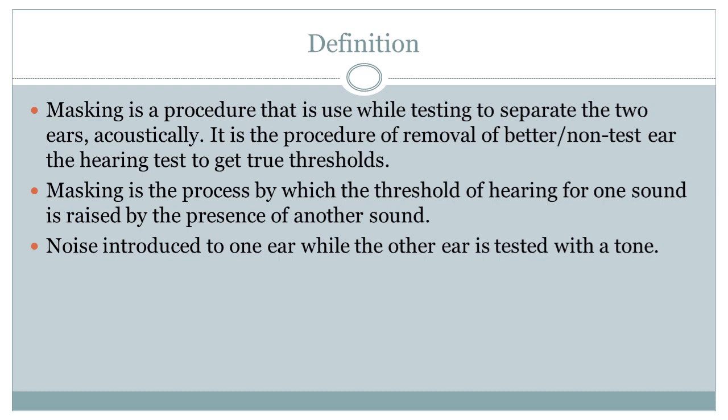We remove the non-test ear, which is the better ear. The minimum level at which we hear is called threshold. Masking is the procedure by which the threshold of hearing for one sound is raised by the presence of another sound. It is a process in which we use noise to raise the threshold of one ear while testing the other.